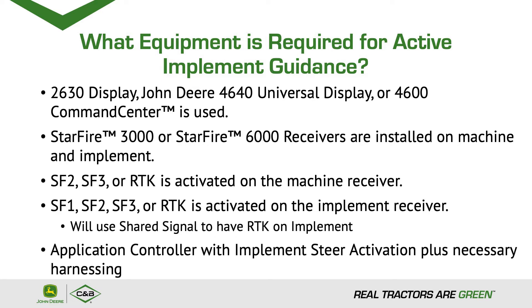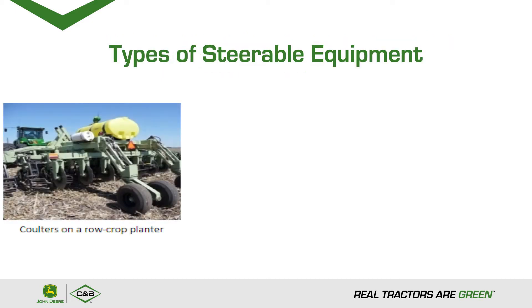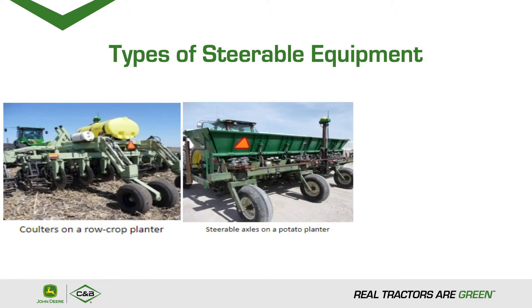We also need an application controller with implement steer activation, plus any necessary harnessing. Types of steerable equipment: First, we have coulters on a row crop planter. The coulters engage the soil and do the steering to hold the planter on the line. Second, steerable axles on a potato planter basically do the same thing — they steer to keep the planter on the guidance line.